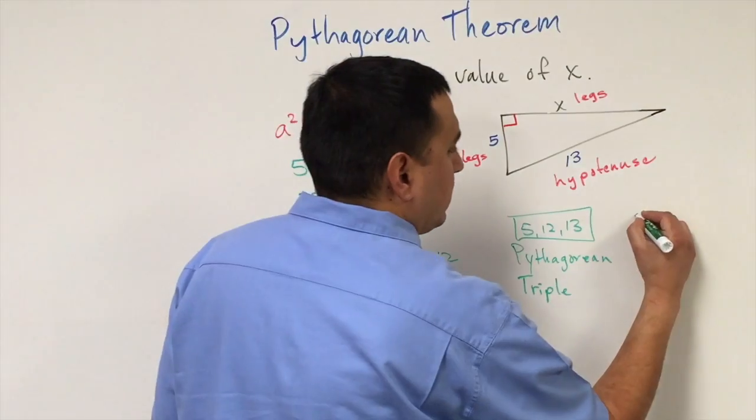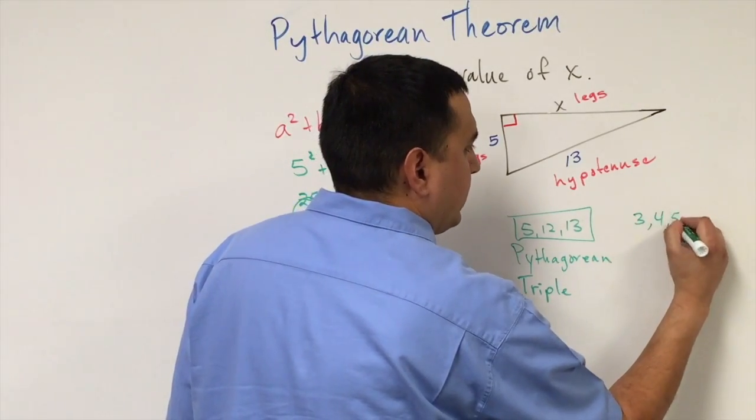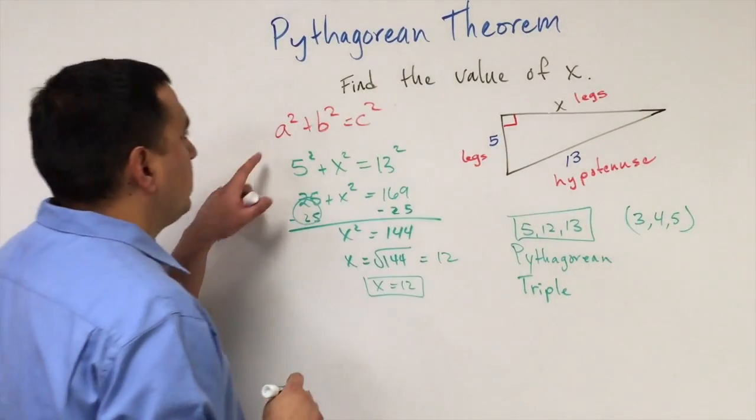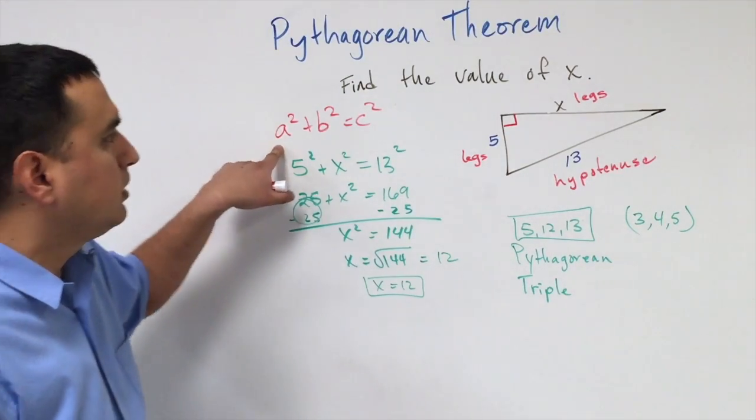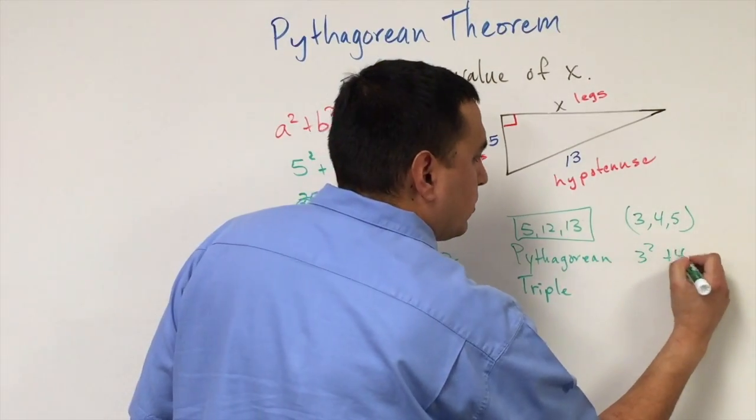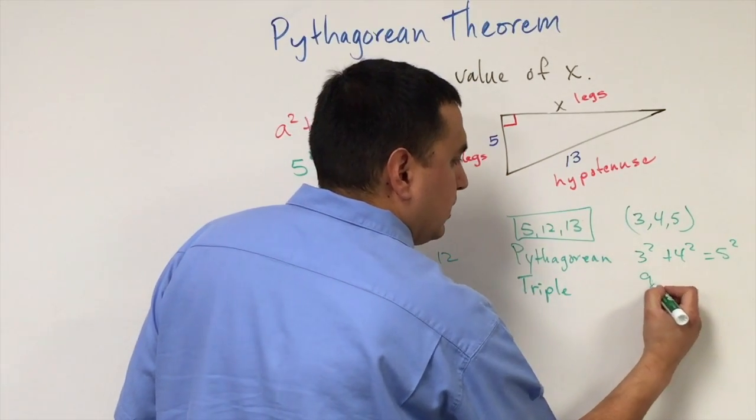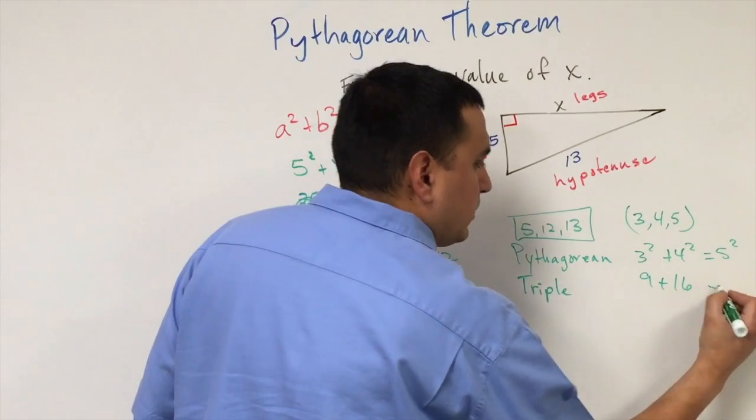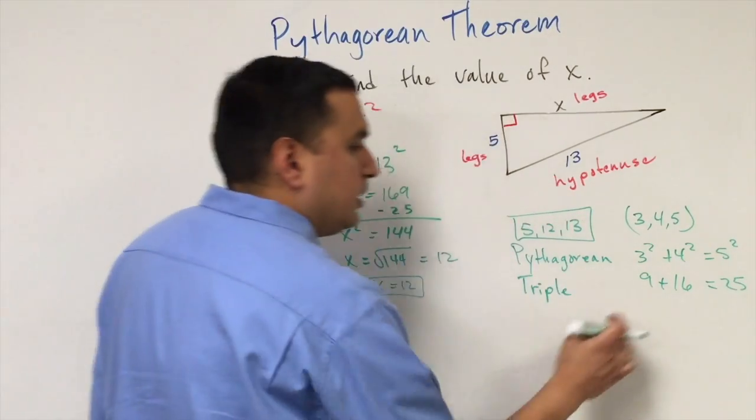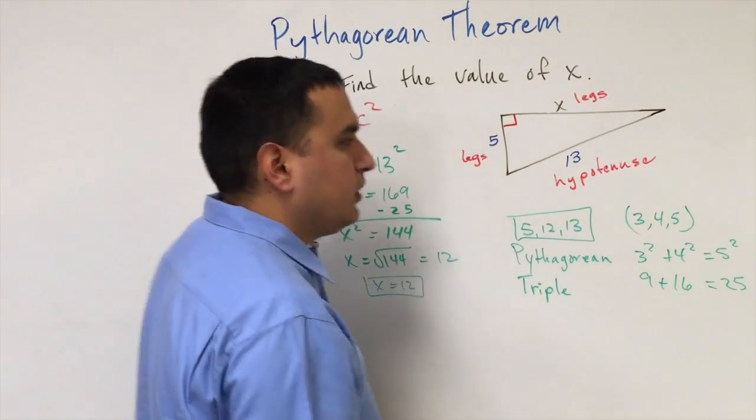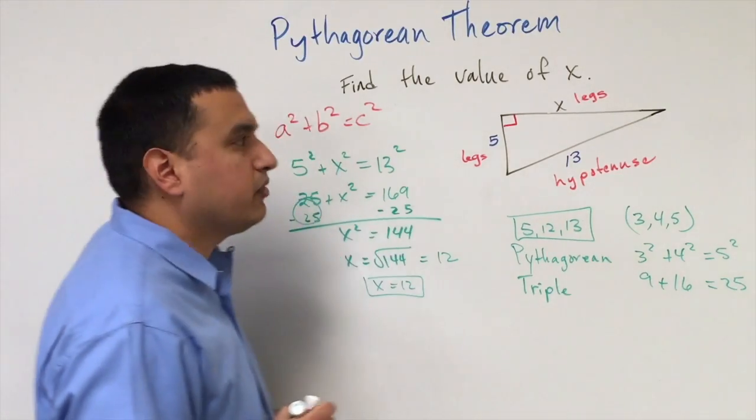Another example would be the numbers 3, 4, and 5. If you plug them into this formula, it works. You have 3 squared plus 4 squared is equal to 5 squared. This would be 9, that one would be 16 and this would be 25. 9 plus 16 is 25. So this would be another example of a Pythagorean triple.